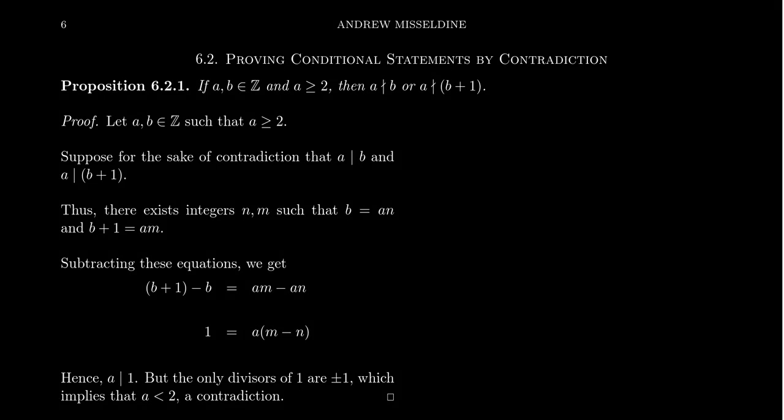Direct proof and proof-by-contradiction are two methods we've introduced so far in our lecture series for proving conditional statements like P implies Q.